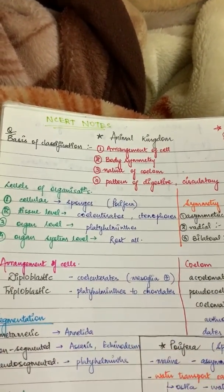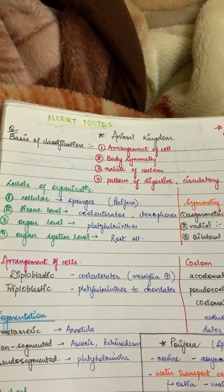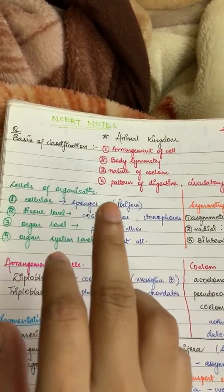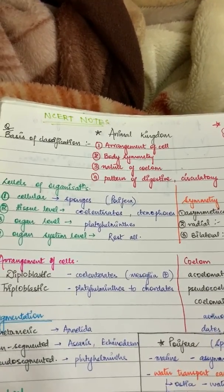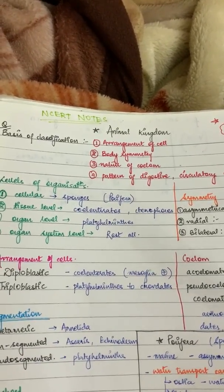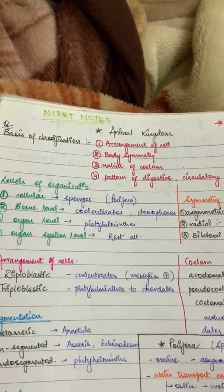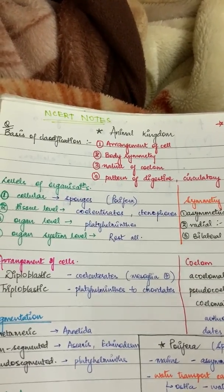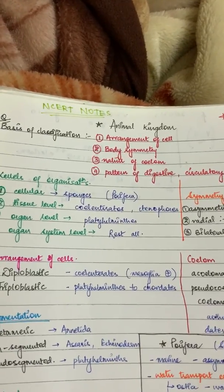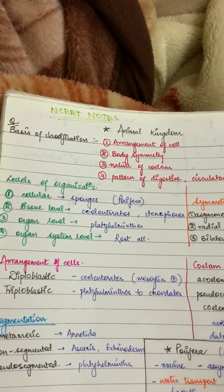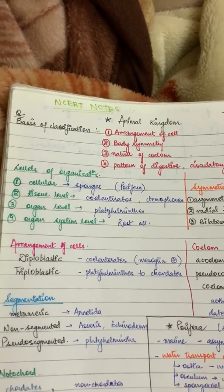You have to read this chapter line by line in the book, and then go through my notes so you will understand how I made them. The first thing is the basis of classification - I have 4 points. These 4 points will generate questions like: which one of the following are the basis of classification, or which one of them is not the basis of classification. You just have to remember these 4 points.